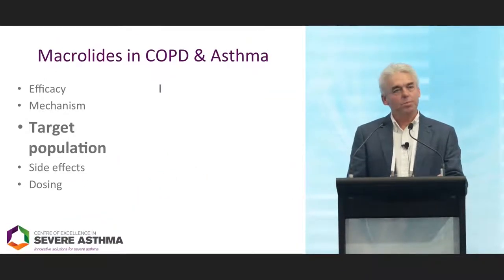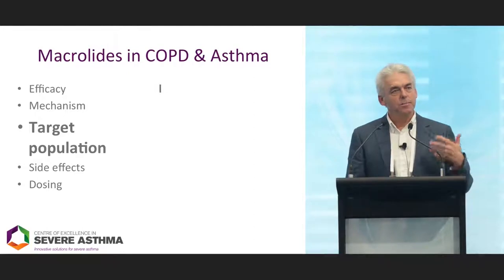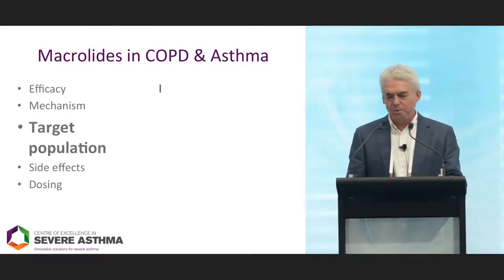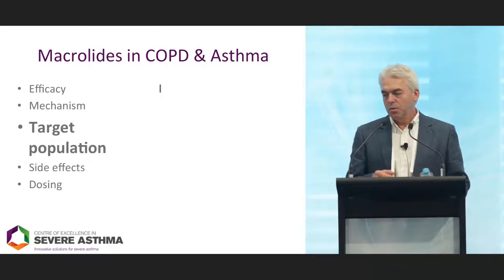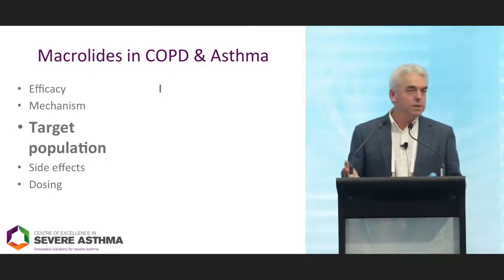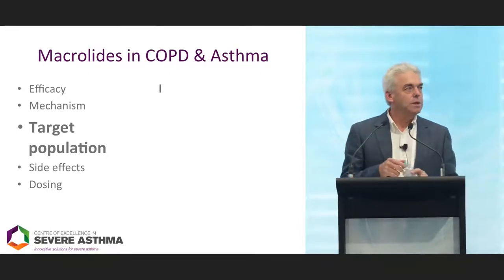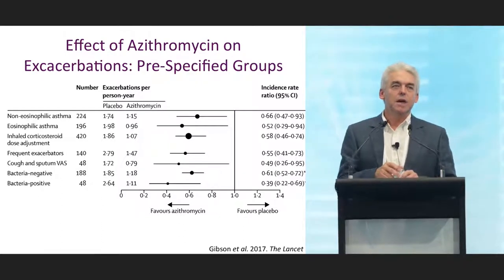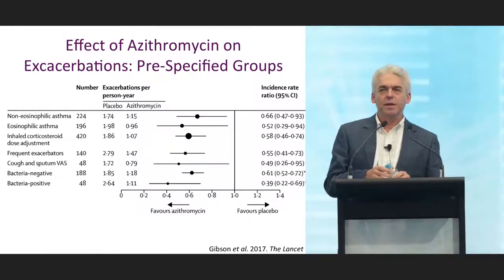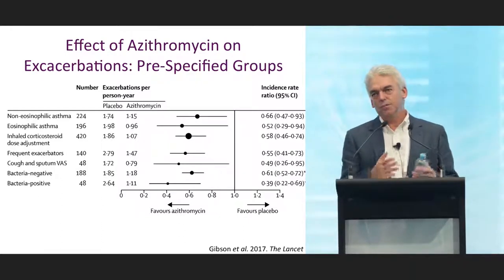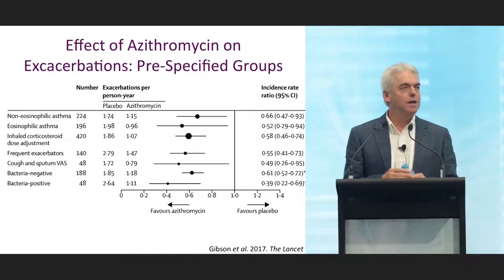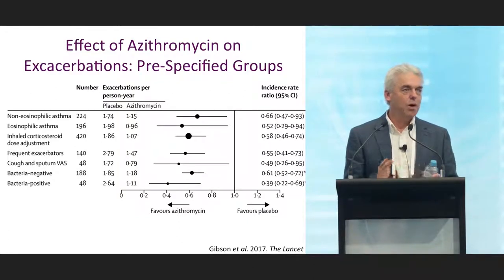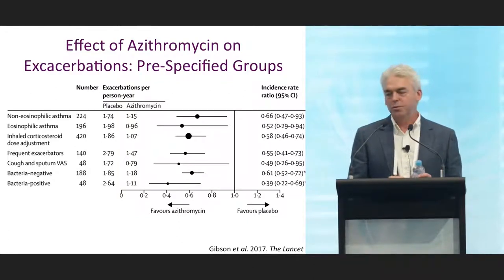What about the target population — can you pick out a group who might do better? We had a go at this, and the large COPD studies have too. The short answer is there are some clues, but it doesn't really apply well when you try to apply it to individual patients.